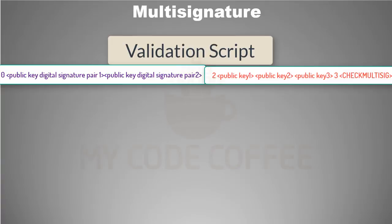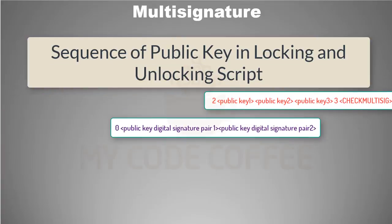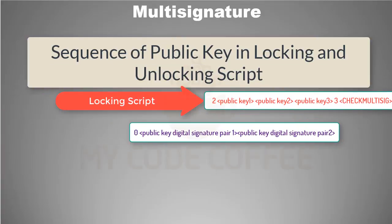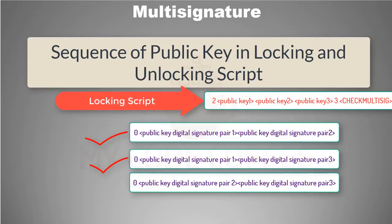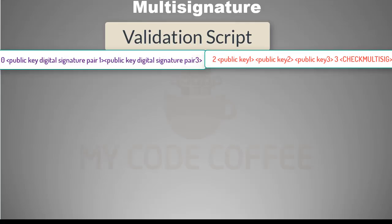Similar to what we saw in the previous chapter, this script is also evaluated using a stack data structure. Remember that the sequence of public key and digital signature pairs in the unlocking script should be the same as the sequence of public keys in the locking script. For example, for this locking script, you can have certain valid unlocking scripts, but you cannot have an unlocking script with mismatched ordering.